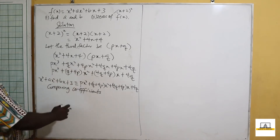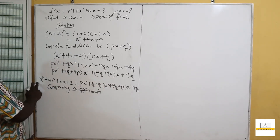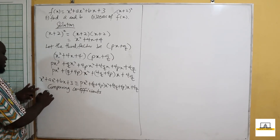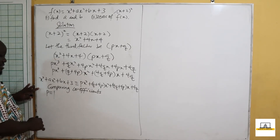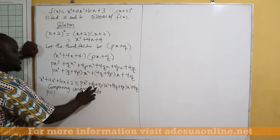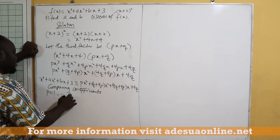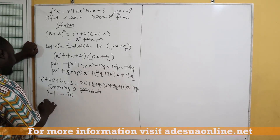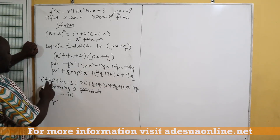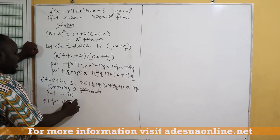When we compare coefficients, we realize we have px cubed and 1x cubed, so p is equal to 1. Now if p equals 1, the coefficient of x squared is q plus 4p, which equals a. Let's call this equation 2.